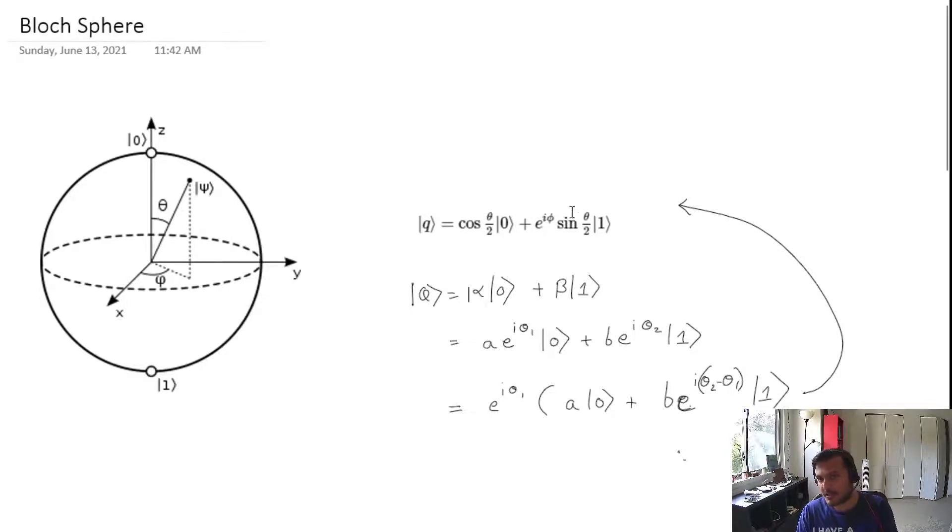The second coefficient would be zero when theta is zero. When theta is zero, it's pointing right above, and theta being zero makes cosine to be one. So that is state zero. State zero is exactly what I said, it's vertically above. Now for state one, this coefficient should be zero, and that is zero when theta is pi because theta over two becomes 90 and cosine 90 is zero.